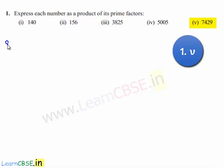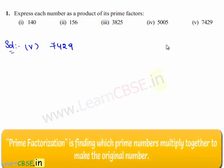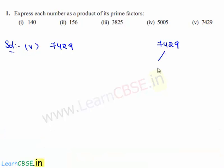Now, let us move on to the fifth bit given. The fifth number given is 7,429. To express 7,429 as a product of its prime factors, we shall factorize this. 7,429 can be written as 17 times 437, as 17 is the least prime number that goes into 7,429.